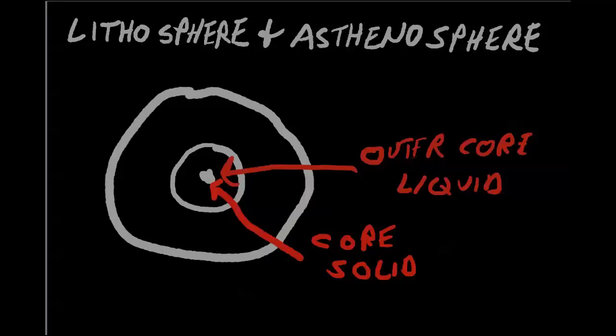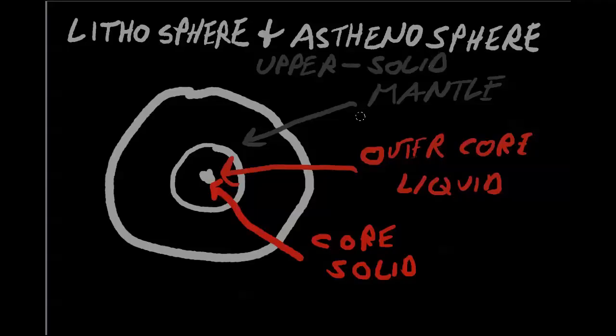The next one we want to take a look at is the mantle and this area in here. The mantle is really broken into two parts. The upper mantle is going to be solid. And the lower mantle is magma. And this is the molten rock. And this is really what the plates are riding on.